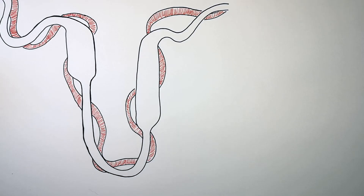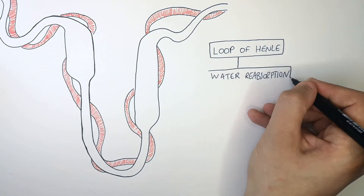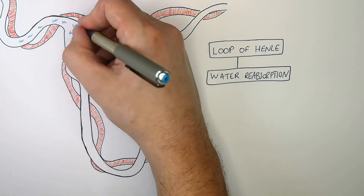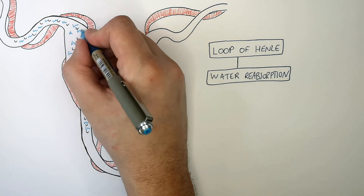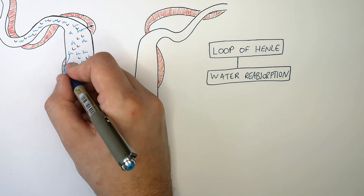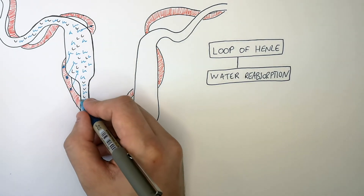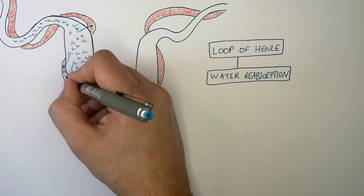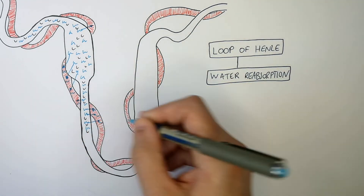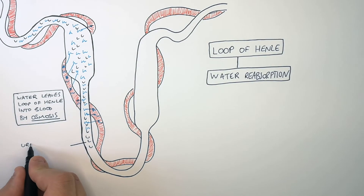Water needs to be reabsorbed out of the nephron and back into the blood — this happens in the loop of Henle. Water and urea enter from the first convoluted tubule into the loop of Henle, whereby water osmoses from a high to low concentration from the loop of Henle into the blood. Water is reabsorbed by osmosis — the movement of water from a high to low concentration through a partially permeable membrane, which is the capillary membrane and the loop of Henle nephron membrane.